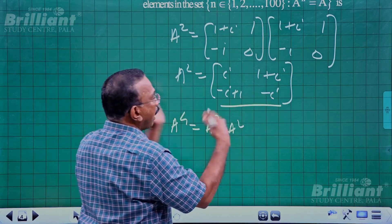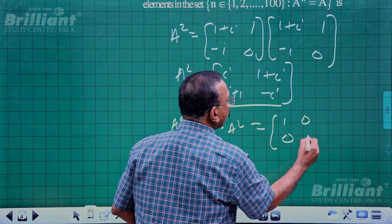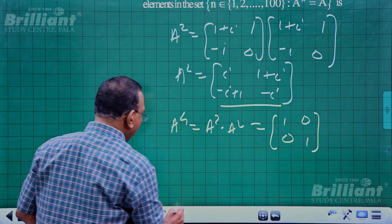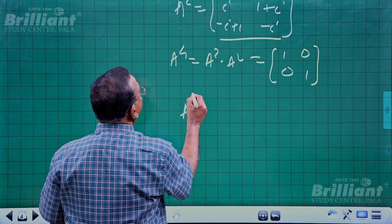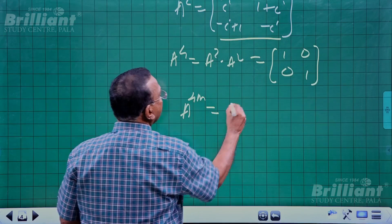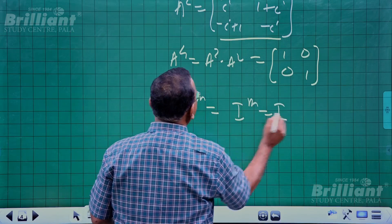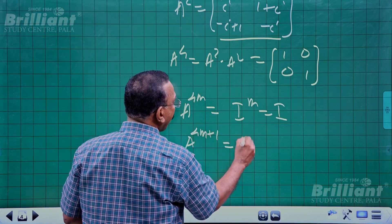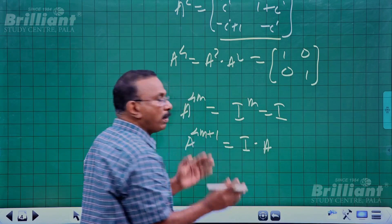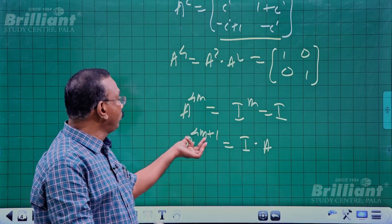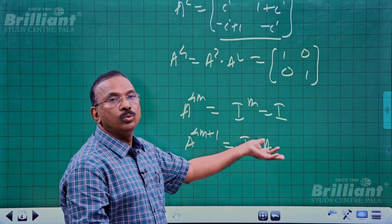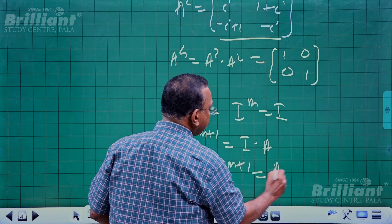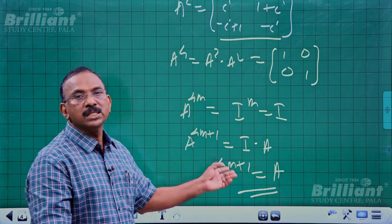Observing that A⁴ = I means A^(4m) = I. Therefore A^(4m+1) = A. This is the key periodicity formula. So we need to count how many n in {1, 2, ..., 100} satisfy A^n = A, i.e., n is of the form 4m + 1.